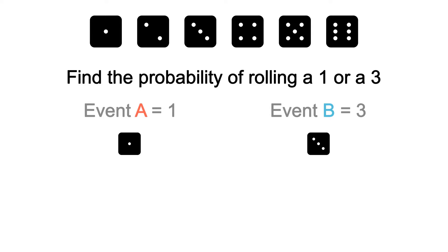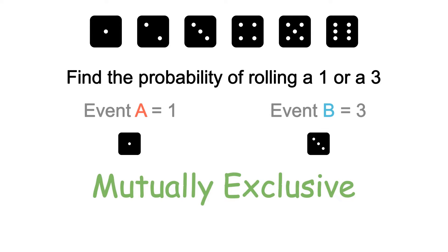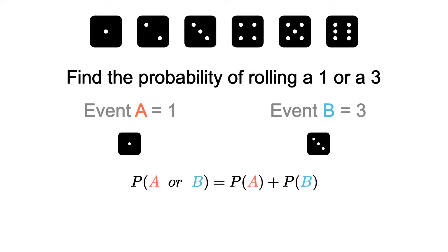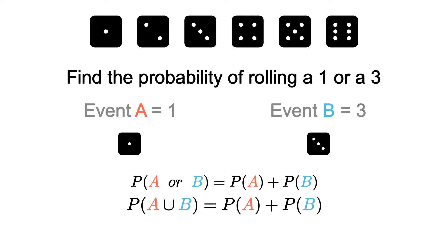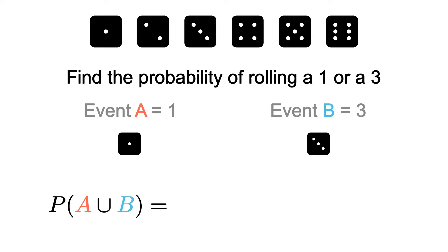When it comes to calculating the probability of mutually exclusive events, we use the formula where the probability of A or B is equal to the probability of A plus the probability of B. We also denote this in set notation with the union symbol, which looks like a U. Both of these are equivalent to each other, and you'll often see the second notation used.